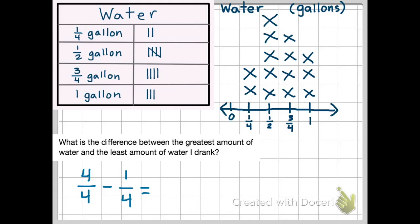So four-fourths subtract one-fourth. We know from a couple of chapters ago that if our denominators are the same, we can just subtract our numerators. So four subtract one is three. We're doing fourths. So three-fourths is the difference between the greatest amount of water and the least amount of water that I drank.